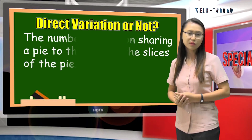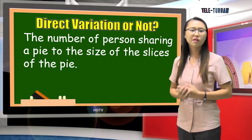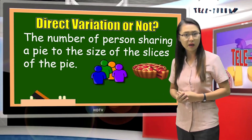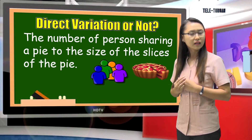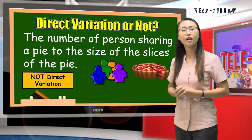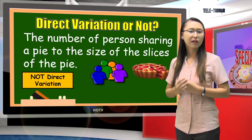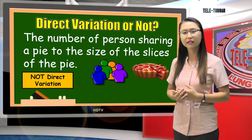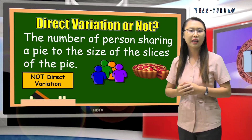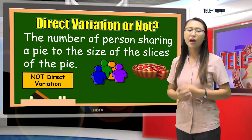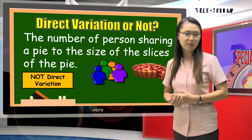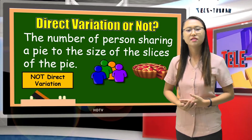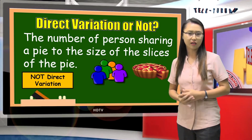How about this one? The number of persons sharing a pie versus the size of the slices of the pie. This is not a direct variation, because if there are more persons sharing a pie, the sizes of the slices of the pie will be lessened. In short, more persons means less pie, or less persons means more pie. So this is not a direct variation.